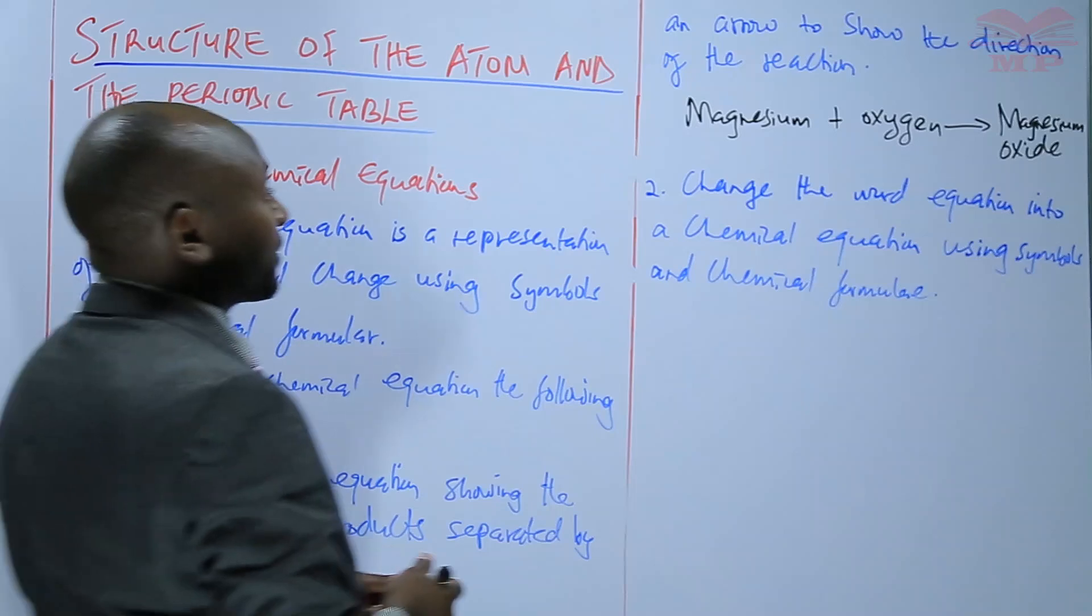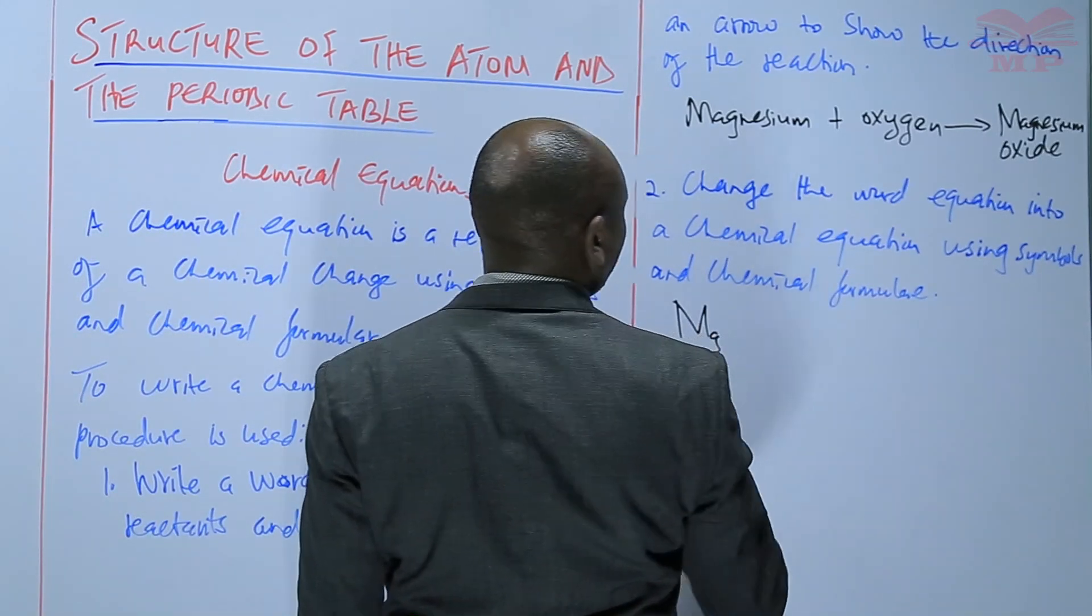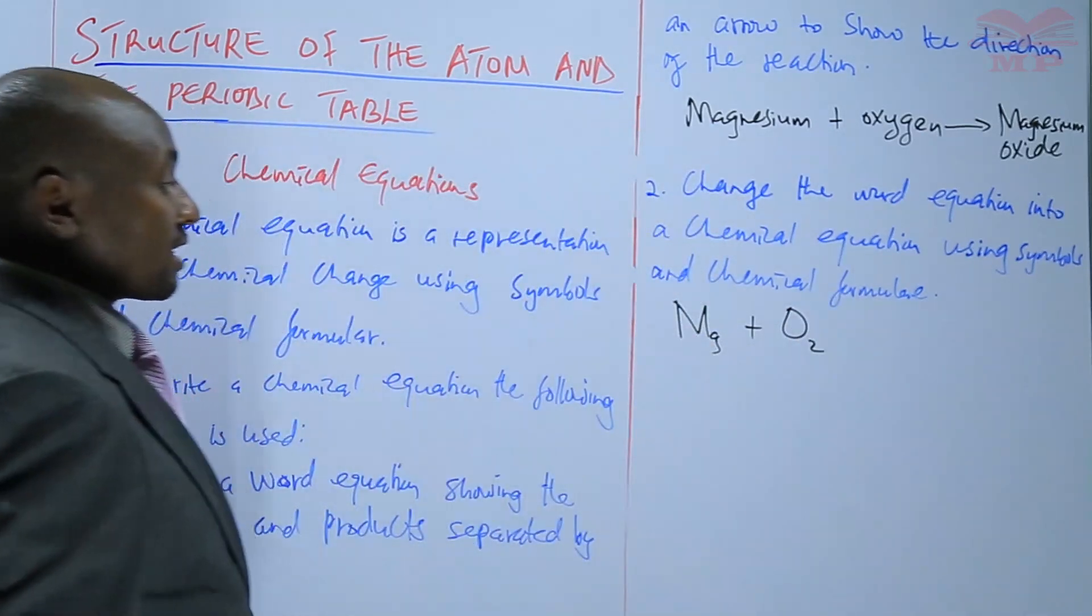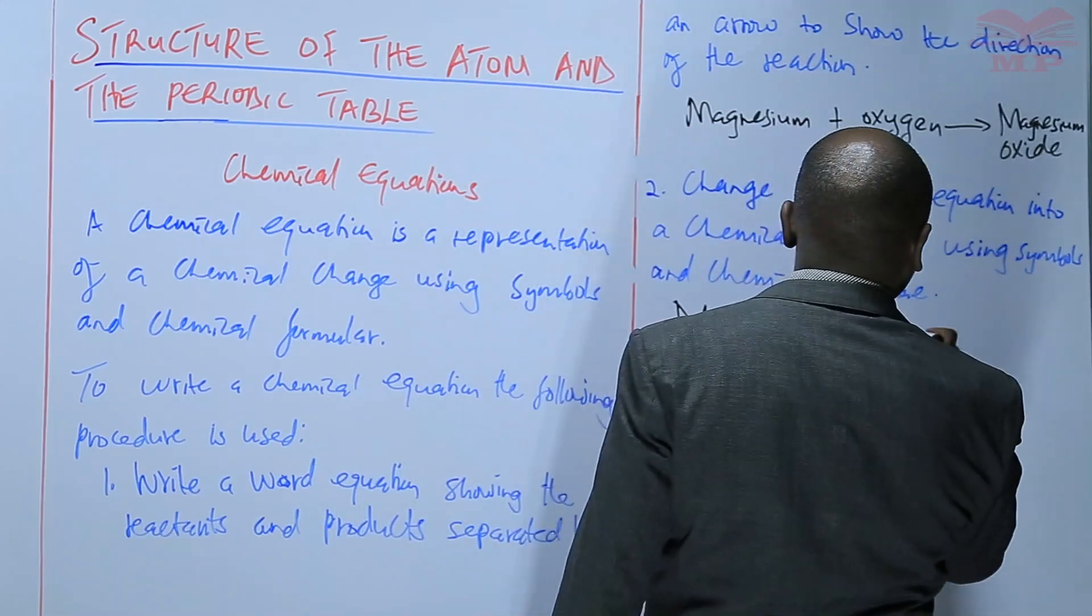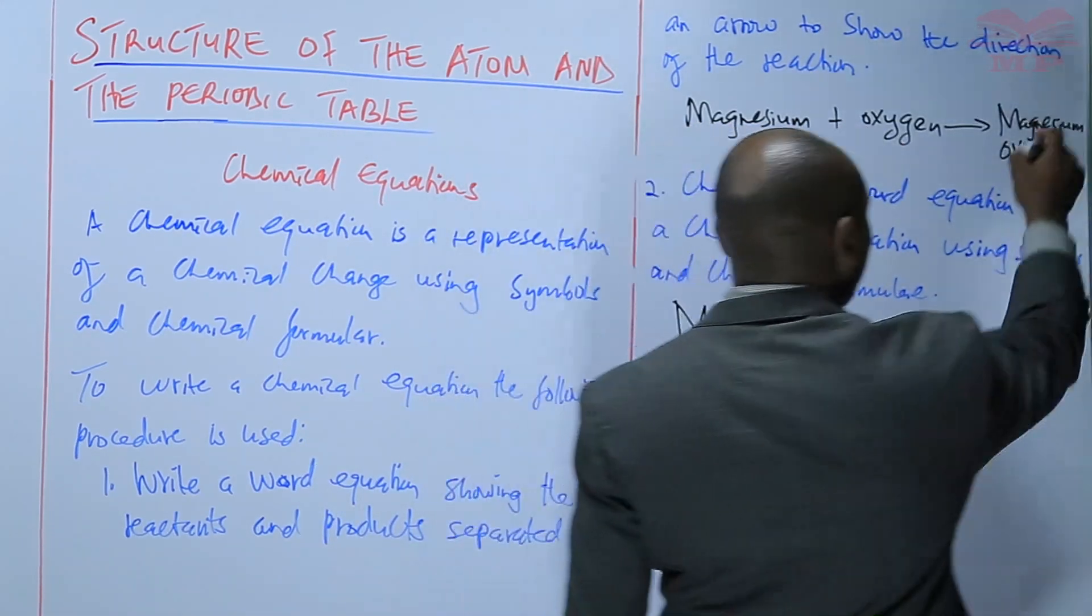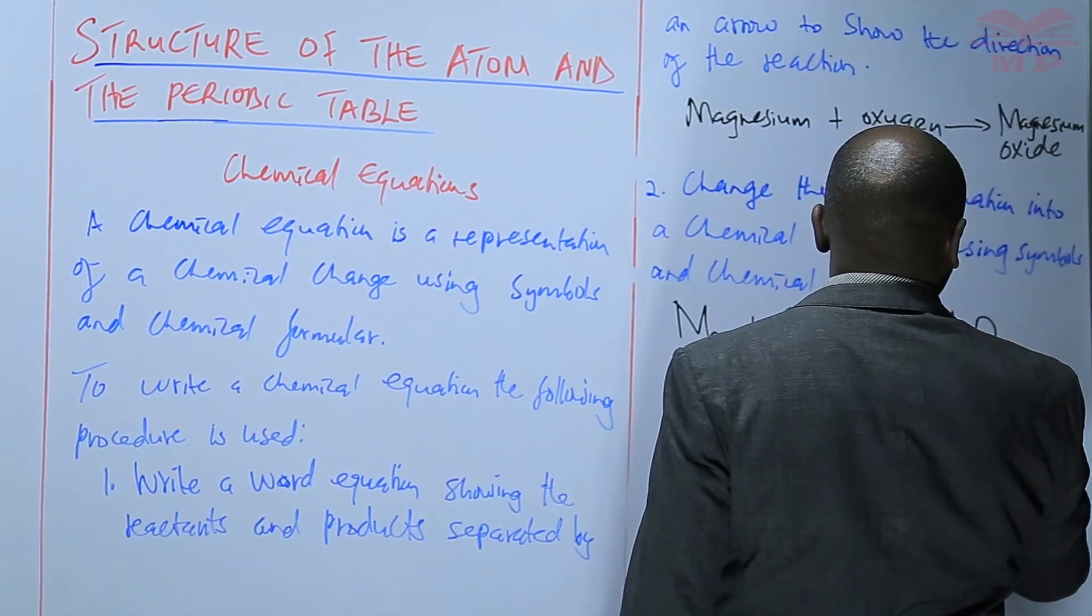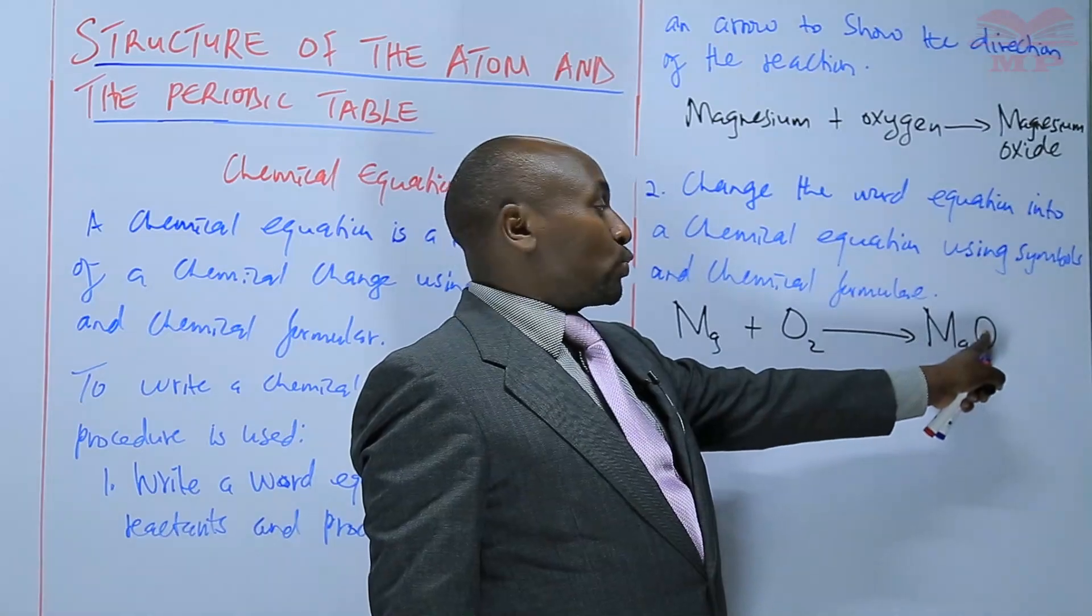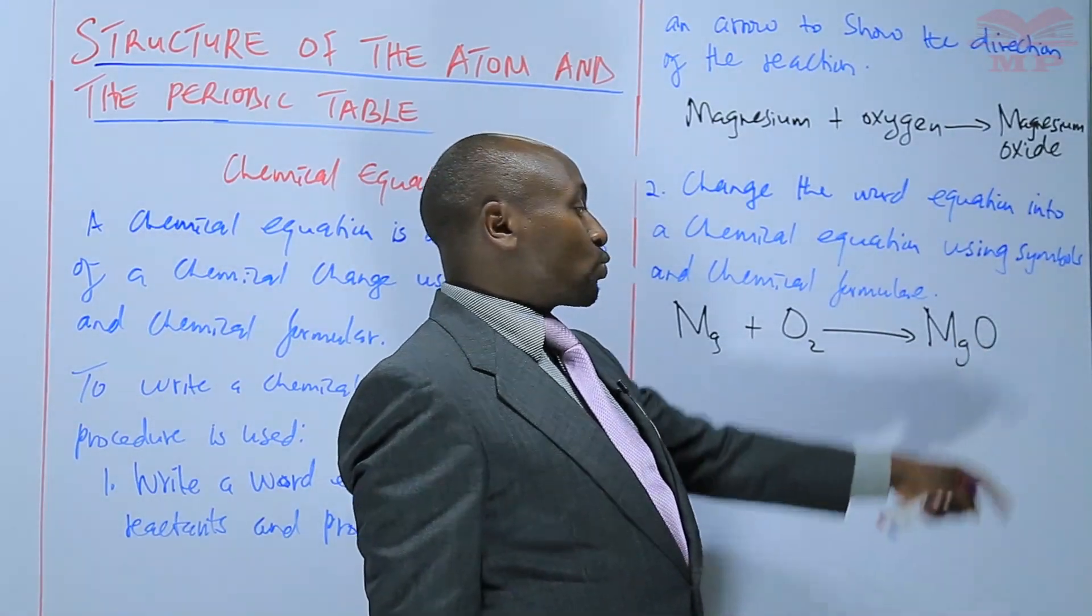Magnesium, the symbol is Mg. Mg plus oxygen O2, because it's a molecule. The formula for magnesium oxide - we use the valence. Magnesium, the valence is 2. Oxygen, the valence is 2. So 2, 2, you simplify the ratio into 1 is to 1.